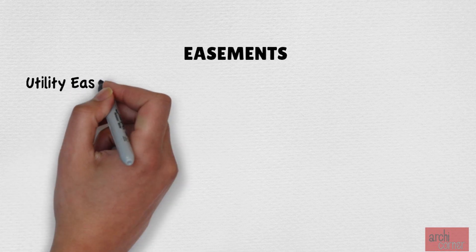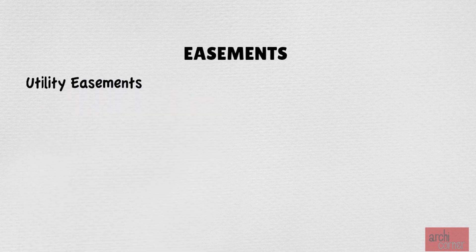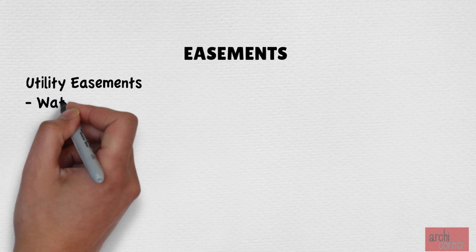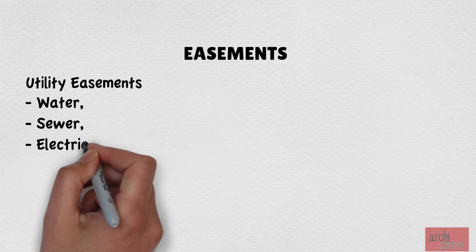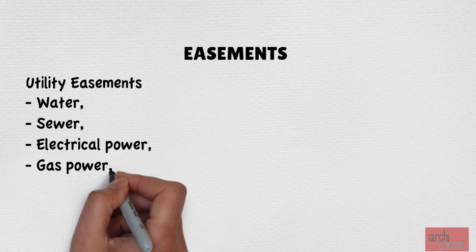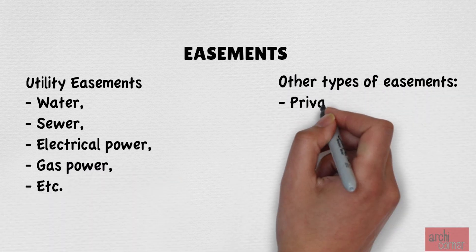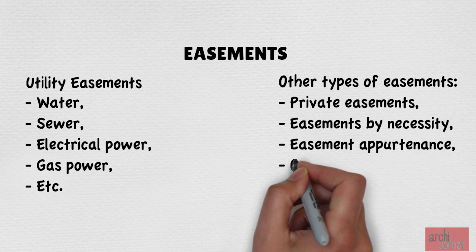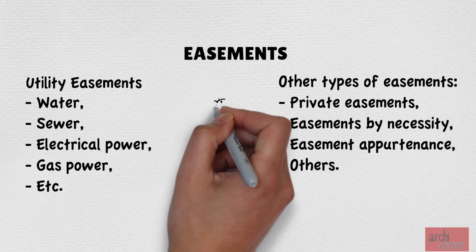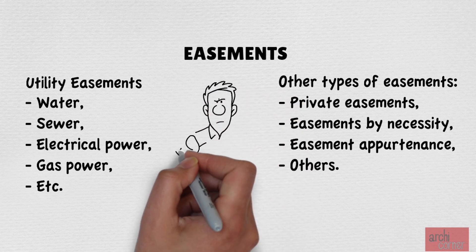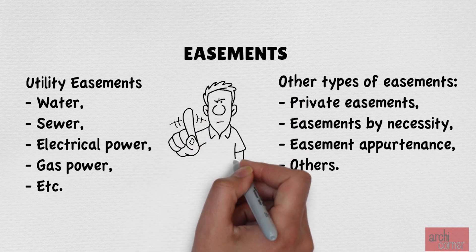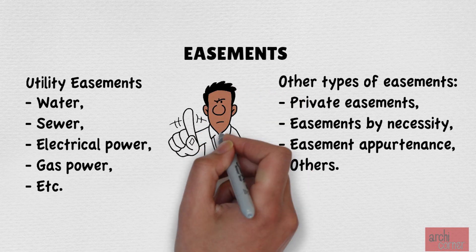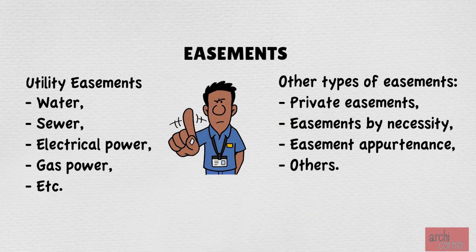Now let's talk about easements. The most common type of easements are utility easements. These allow utility companies to install the infrastructure needed to provide buildings and communities with water, sewers, electrical power, gas, etc. There are other types of easements too, such as private easements, easements by necessity, easement appurtenances, etc. You don't need to know all the different types of easements, but you need to know that if you have an easement on your property, whatever type of easement that may be, you will not be able to build on that easement.